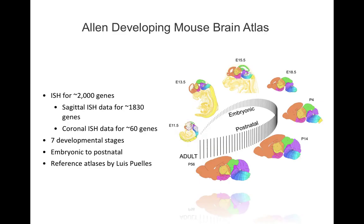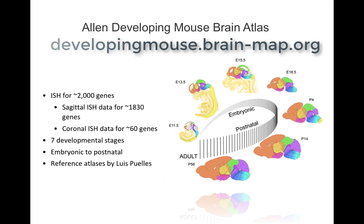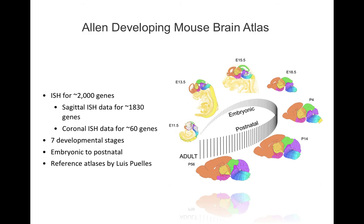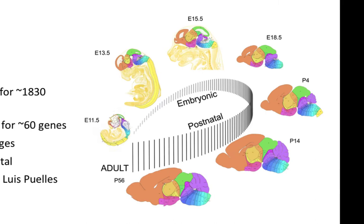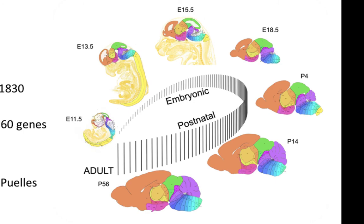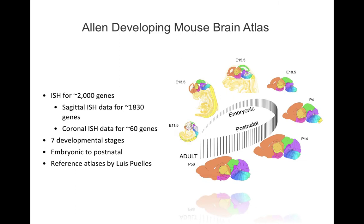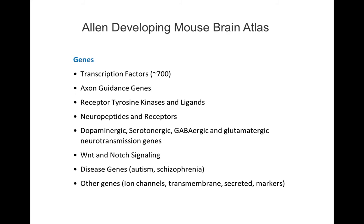The data collected for the developing mouse brain project was done with an identical methodology. However, the number of genes assayed was limited to approximately 2,000 genes that were selected for their known relevance at the time. The gene expression pattern for these genes was collected over seven developmental stages: four embryonic stages and three postnatal stages. Reference atlases for each of these stages were drawn to differing levels of complexity by Allen Institute collaborator Professor Luis Pueyes from the University of Mercia in Spain. This is a list of the kinds of genes that were determined by a scientific advisory board to be relevant genes to assay at the time.